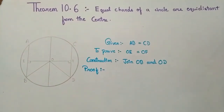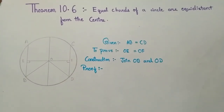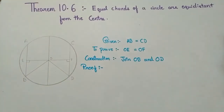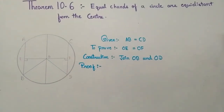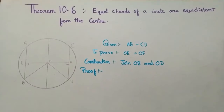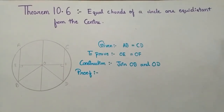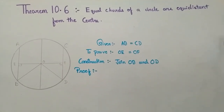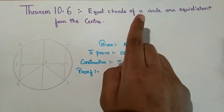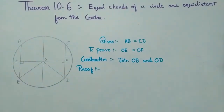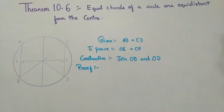Hi friends, welcome to my YouTube channel Smart Study Point. In this video I will tell you about Theorem 10.6 of Class 9 NCERT book, Chapter Circles. Theorem 10.6 states that equal chords of a circle are equidistant from the center.